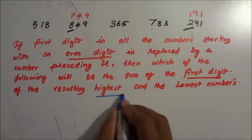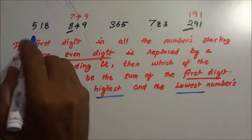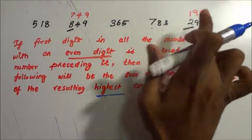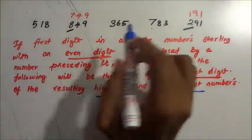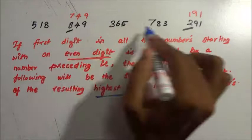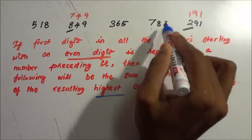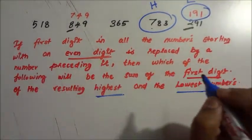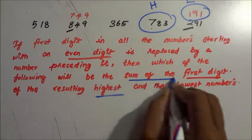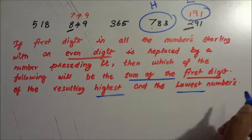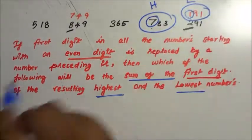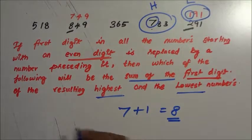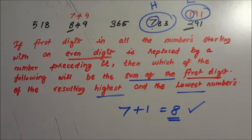Now we have to check for the highest and lowest numbers among the rearranged values. We forget the unchanged numbers and check with the modified ones: 749 or 783. So 783 is the highest number and the other is the lowest. They asked for the sum of the first digits of the resulting highest and lowest numbers. The first digit is 7 and the first digit of the lowest is 1, so 7 plus 1 equals 8. The answer is 8.